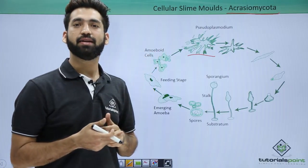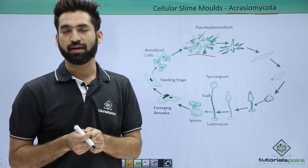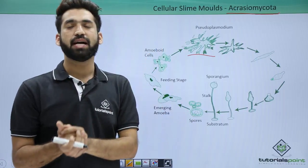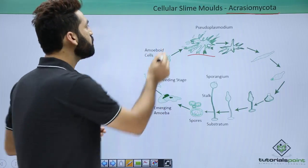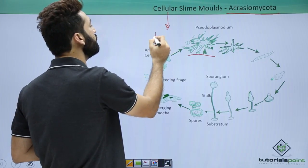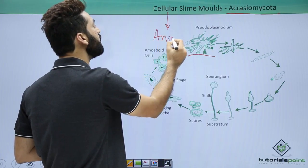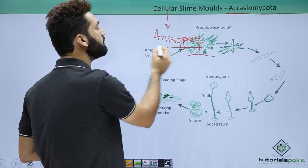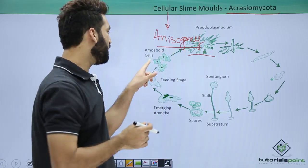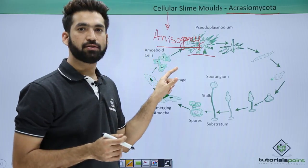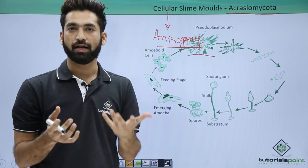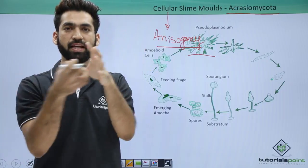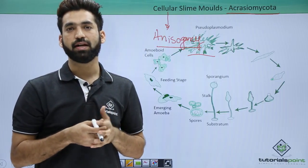In acellular slime mold, reproduction was by isogamy — swarm cells fusing with swarm cells. But in cellular slime mold, it is anisogamy, which is the fusion of gametes that are different in size. One of the amoeboid cells becomes large and one remains small, so the larger amoeboid cell engulfs the smaller amoeboid cell.